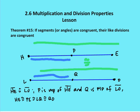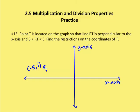Alright, so let's apply that to a practice problem. Practice problem says point T is located on the graph so that line RT is perpendicular to the x-axis, and 3 is less than RT is less than 5. So what does that look like? Point T is located on the graph so that RT is perpendicular to the x-axis, and RT is between 3 and 5. We're also given that point R, the location of point R is negative 5, 1.